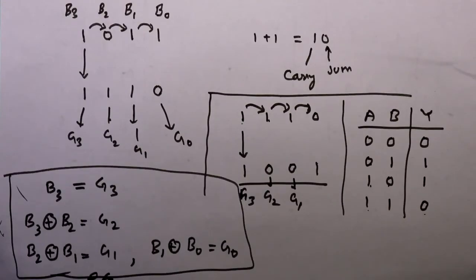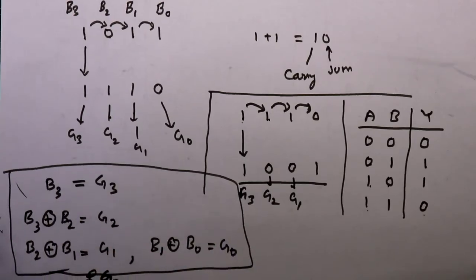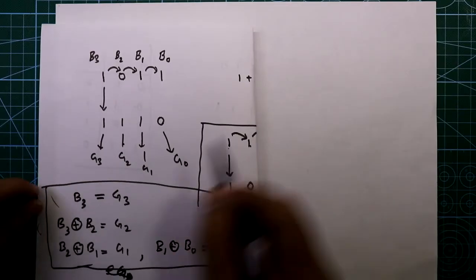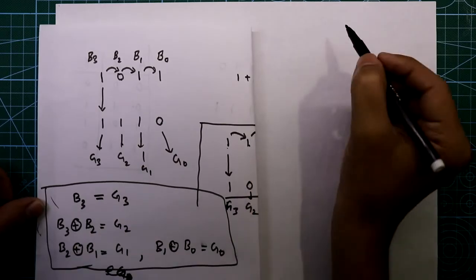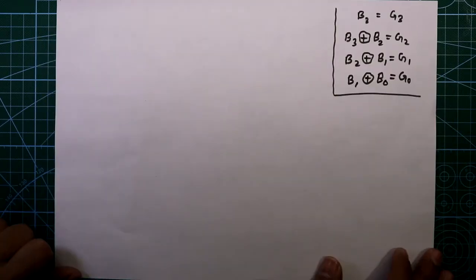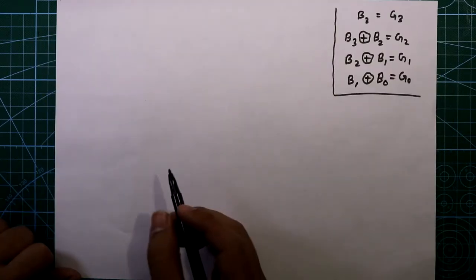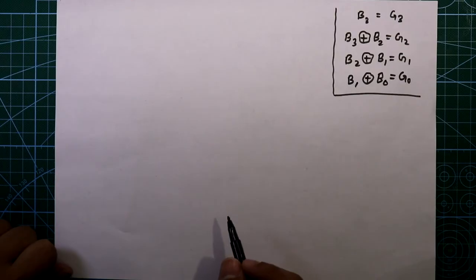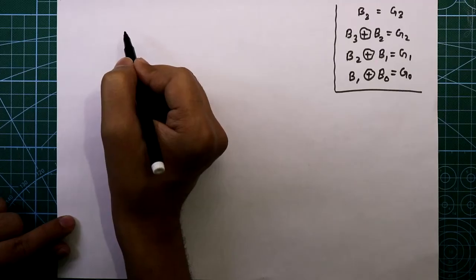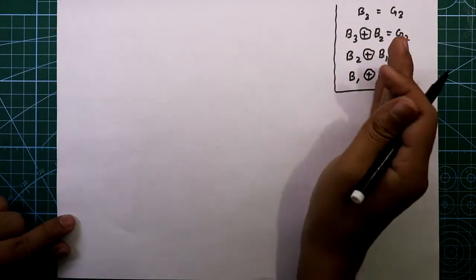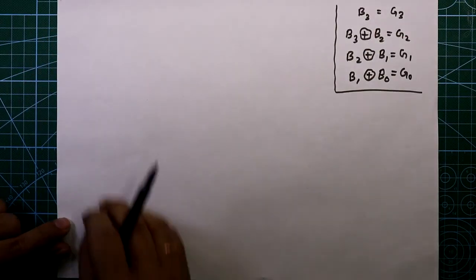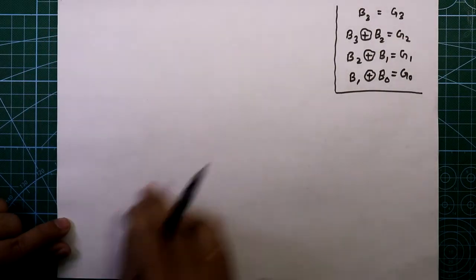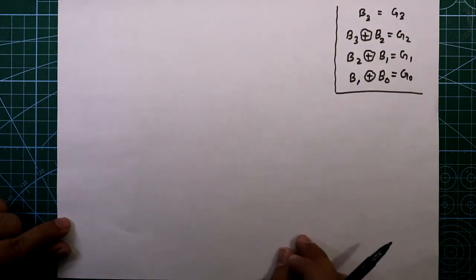Now we have to make a practical circuit according to these equations. I'll write the equations here — G3 = B3, G2 = B3 XOR B2, G1 = B2 XOR B1, G0 = B1 XOR B0. Since we are converting binary to gray code, our input will be on one side and output on the other side.